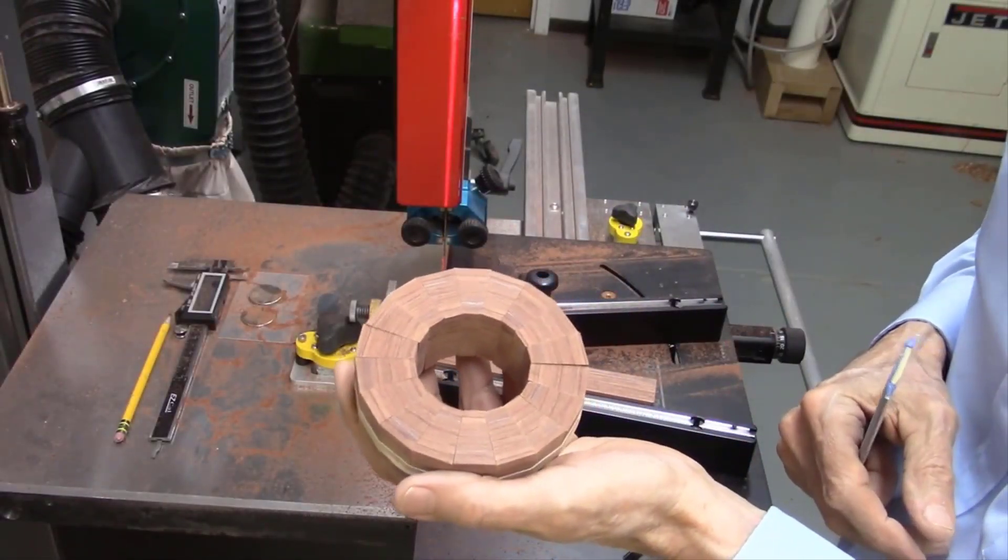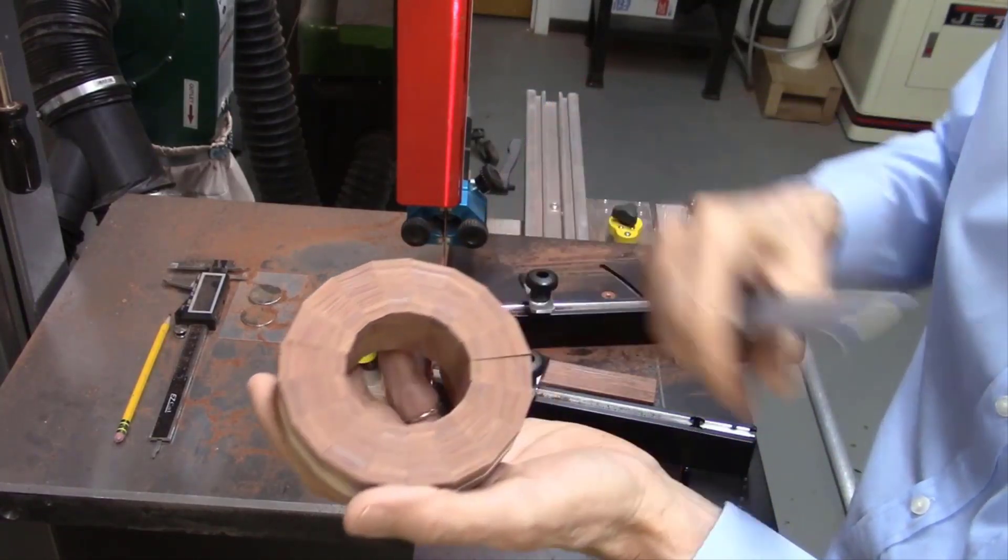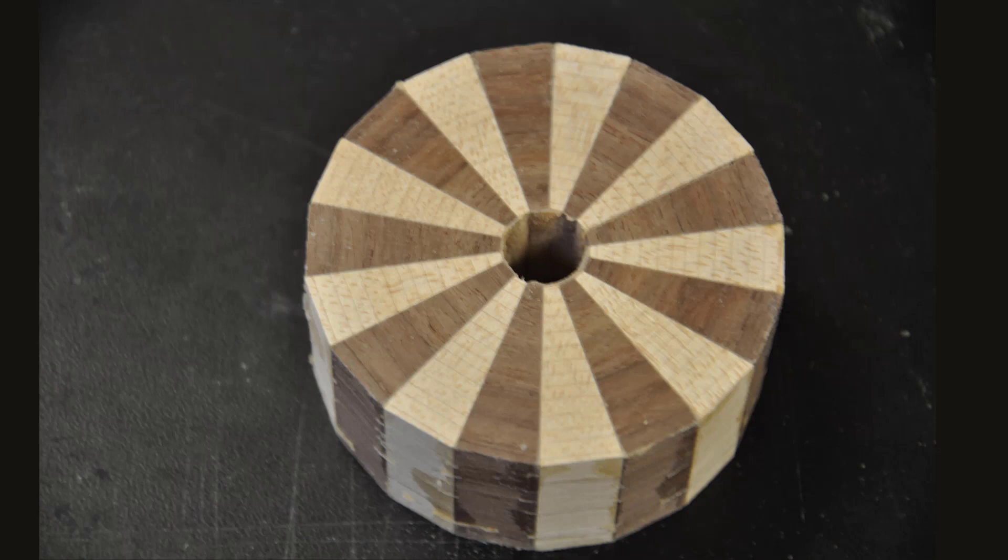So after sanding off the fuzzies and cleaning up the edges, I have my completed disc exactly 4 inches in diameter. Here's an example of a glued up segmented ring with alternating contrasting woods.